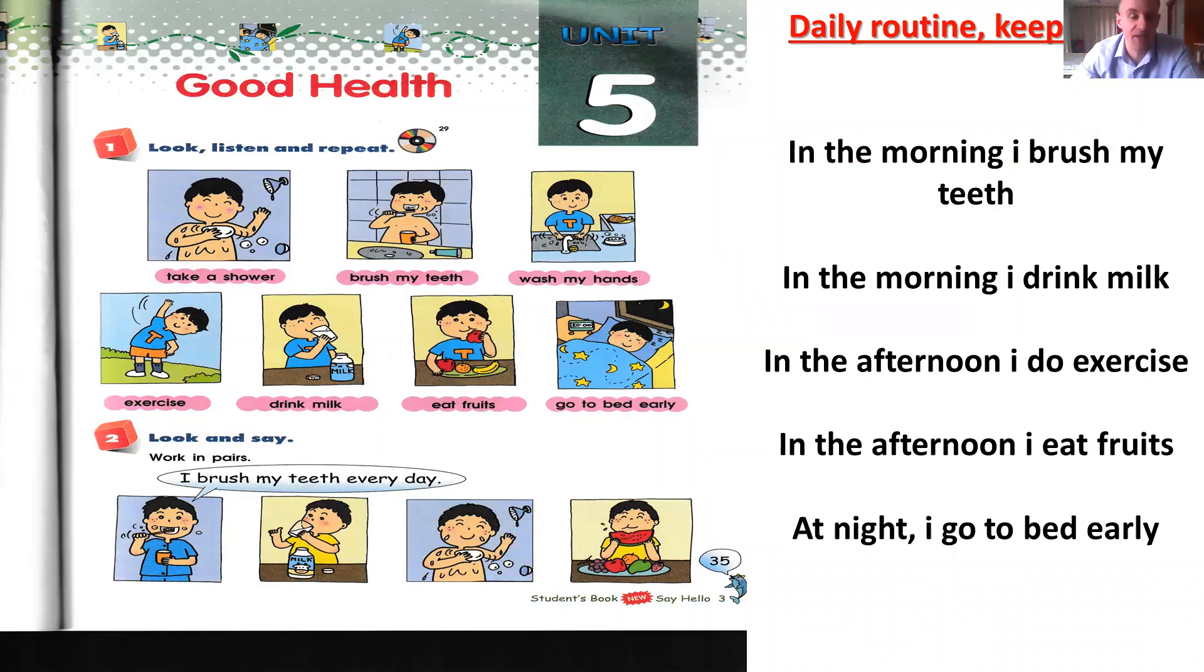We continue with the daily routine. When you repeat these sentences, take a look at the correct picture. In the morning, I brush my teeth. In the morning, I drink milk. In the afternoon, I do exercise. In the afternoon, I eat fruits. At night, I go to bed early. Be careful: in the morning, in the afternoon, you can say in the evening, but at night.